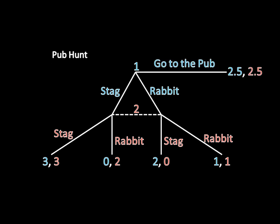I'm going to call this the Pub Hunt. Player one has an option of not only hunting a Stag or a Rabbit, but at the beginning of the game, he could choose to go to the Pub. As player two is walking out to the hunting range, she'll see him at the Pub, they'll join up, and they'll both get 2.5 points of utility — better than any outcome other than hunting a Stag together. The basic drama for player two is that when she makes her move, she doesn't know whether player one has hunted a Stag or a Rabbit — she only knows that he didn't go to the Pub. So she's essentially playing a guessing game. However, the presence of this go-to-the-Pub move allows player two to infer exactly what player one did.